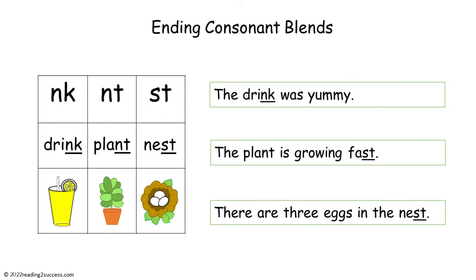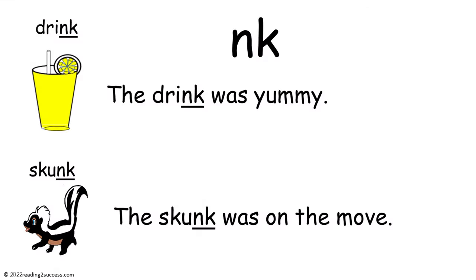When kids are ready, go to the next set of ending consonant blends: NK, NT, and ST. Introduce kids to the blend NK. Explain that the letters NK blend together when said as in the words drink and skunk. Then read the sentences with kids: 'The drink was yummy' and 'The skunk was on the move.'